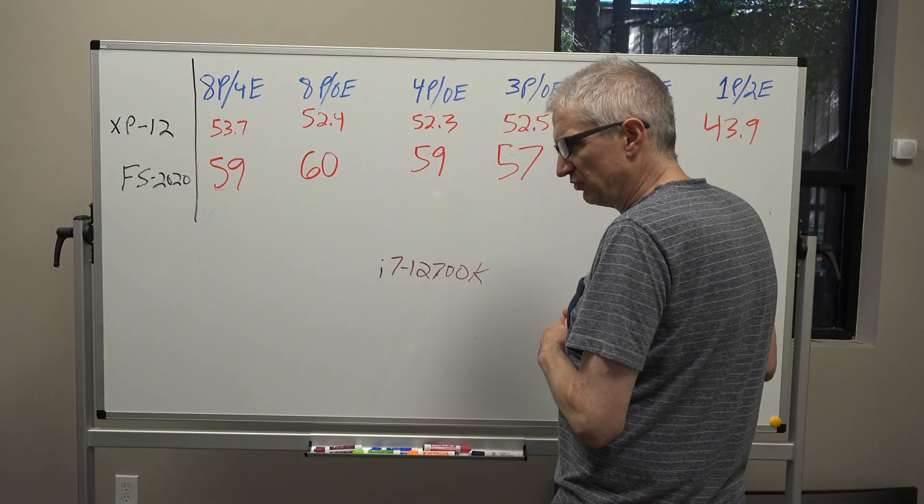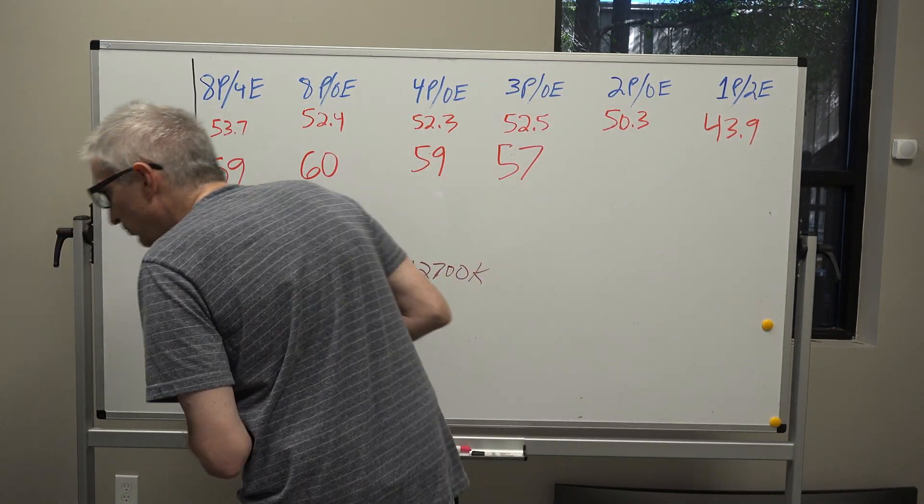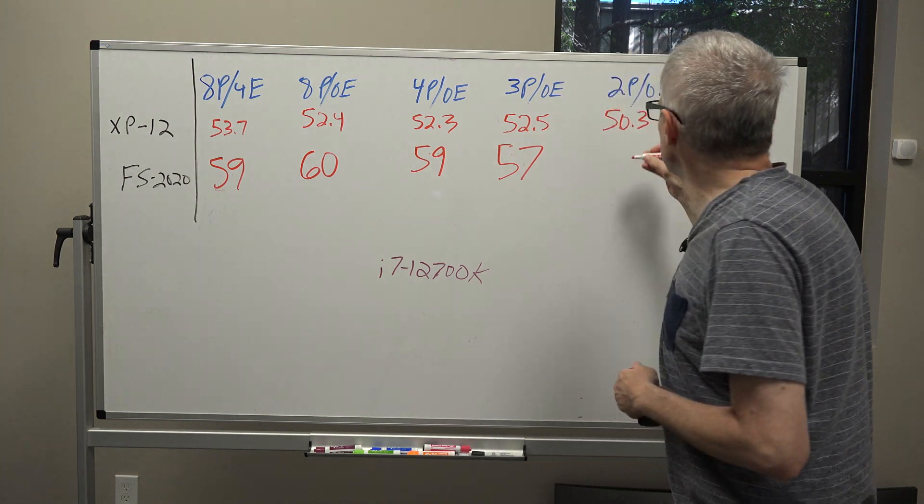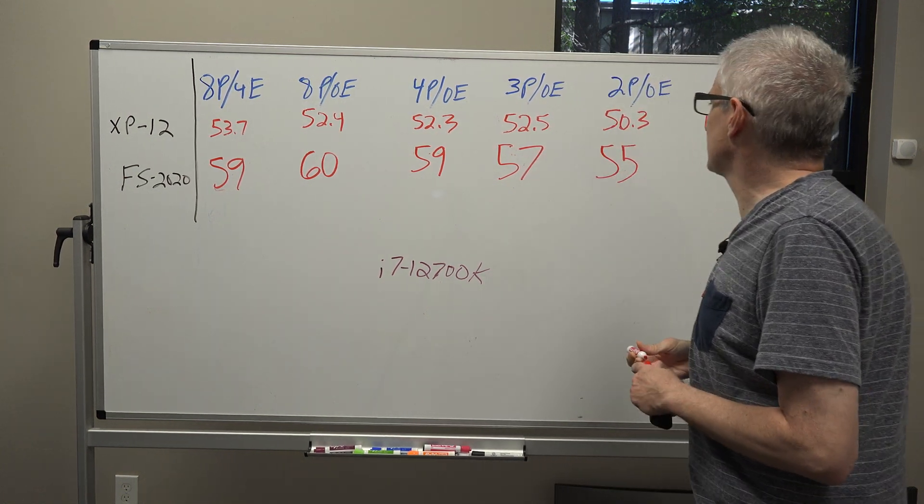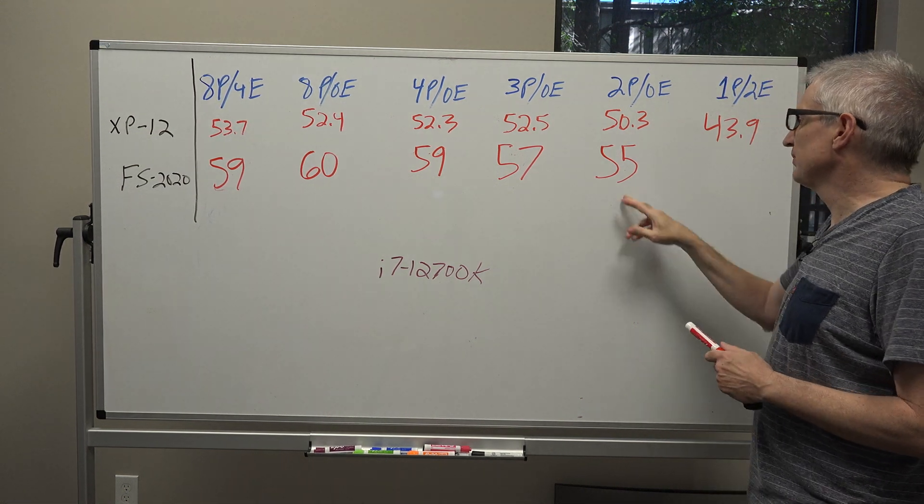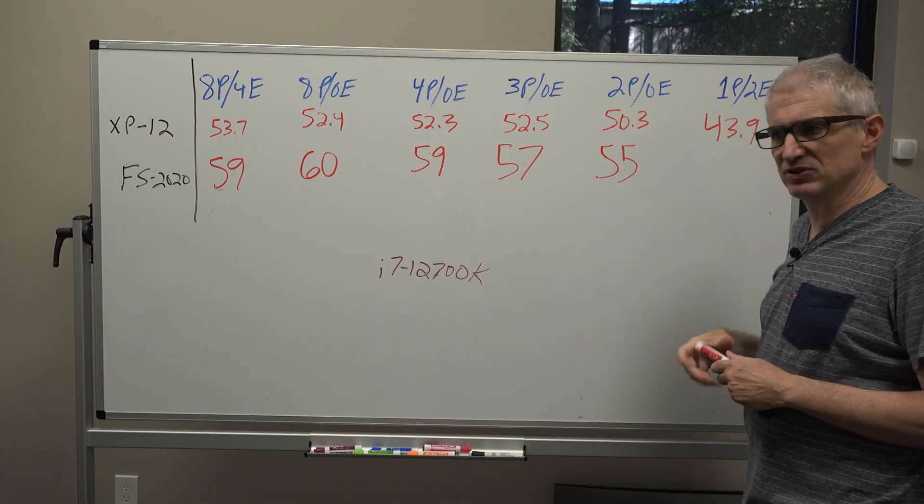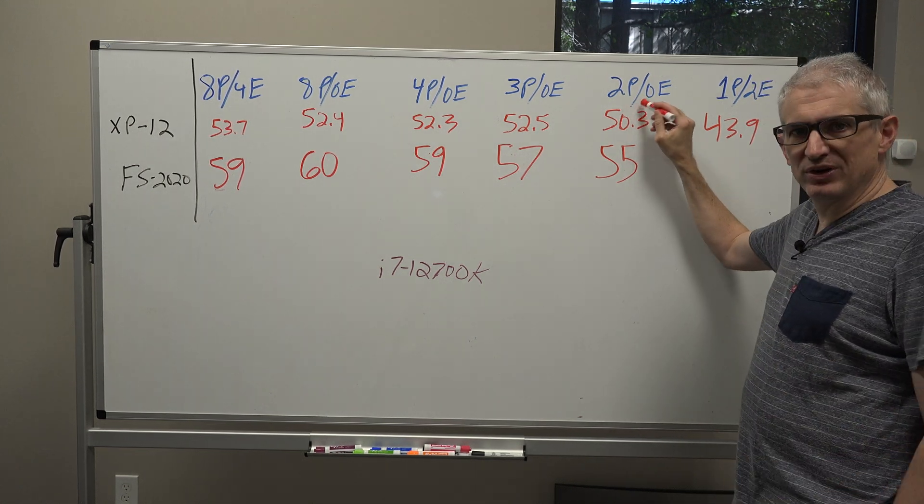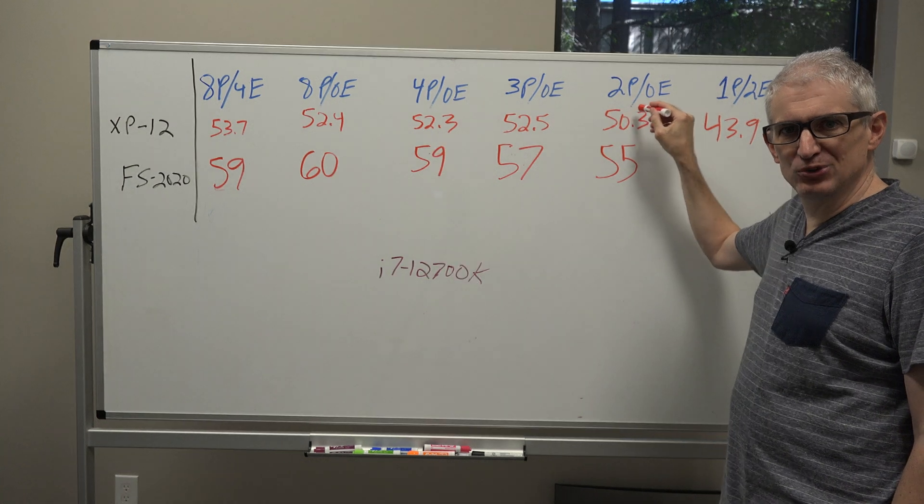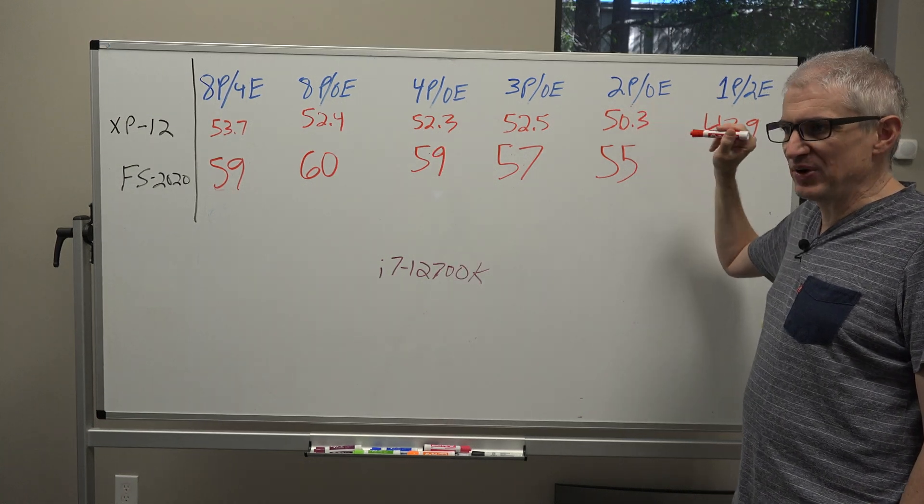So the next thing I did was take us down to two performance cores and no efficiency cores and we saw 55 frames per second. Yes, that's a two frame per second difference but you're not going to notice that with your eye. So yes, we're down to two cores, a dual core processor. We haven't been on dual core processors in over 10 years.